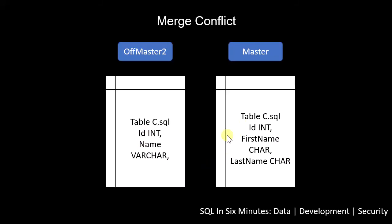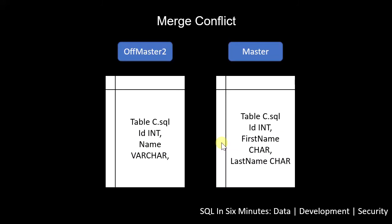It's going to ask us to pick between the source and the target or destination, depending on the tool. Because it says: 'You want to merge off master 2 into master, but I see that master's file has been edited as well — so which one am I going to take?' Because they both changed.